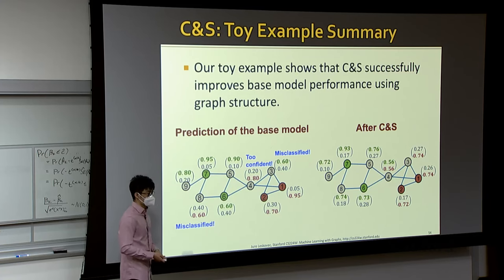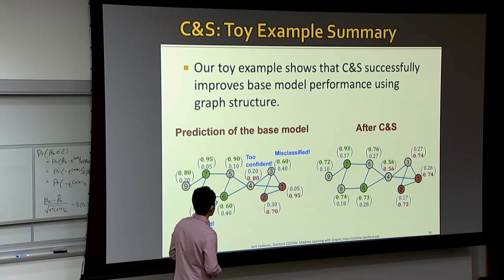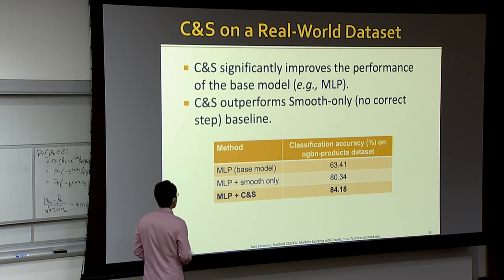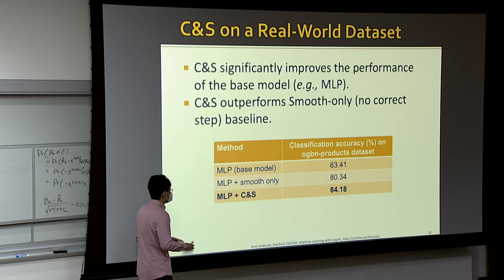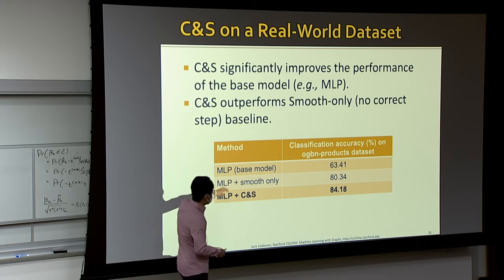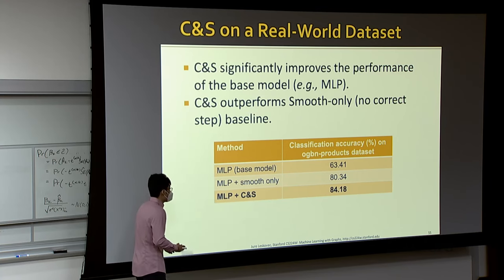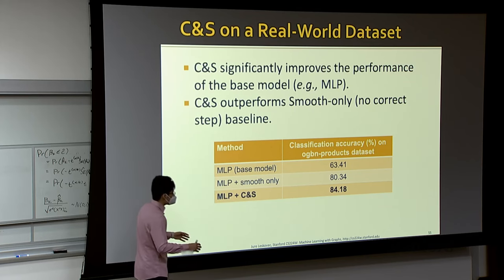Under this formulation the model isn't cheating: we always use some node labels to predict the remaining node labels, so there's no direct label leakage. This is how we handle training time. If the model successfully learns this at training time, then at inference time we employ all observed node labels to predict the remaining unobserved node labels — used for both validation and test sets.